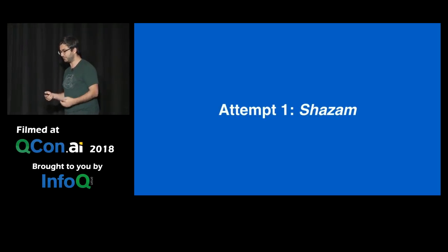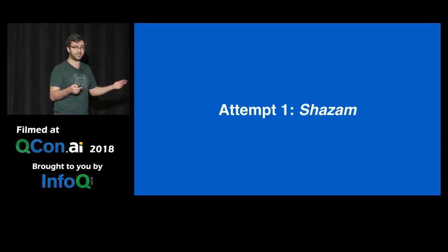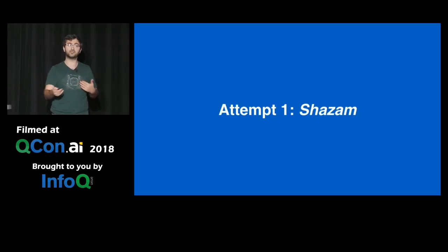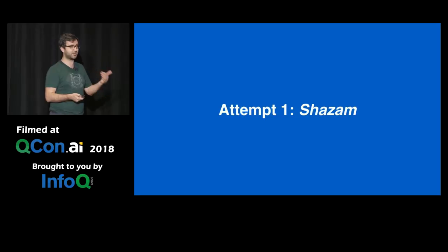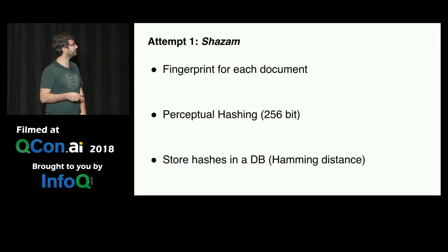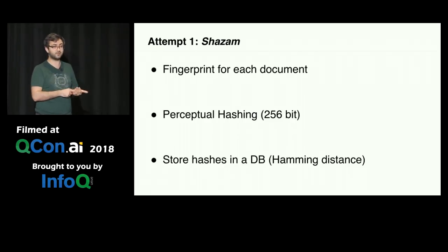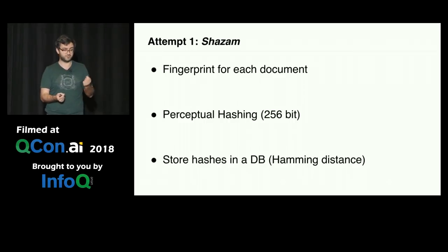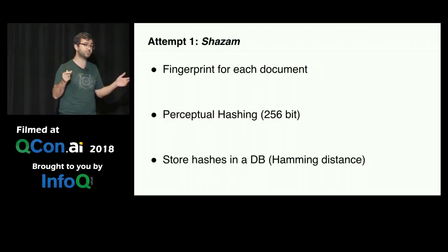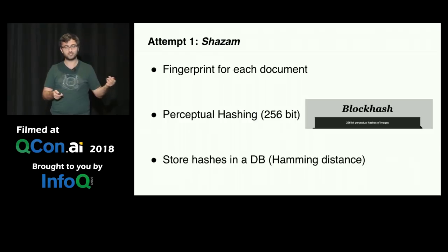I'm going to tell you the story of how we got to where we are with this problem. Our first attempt, we called it Shazam. The inspiration was audio fingerprinting — much like audio fingerprinting, we're trying to fingerprint identity pictures: driver's licenses, passport photos, green cards, things like that. What Shazam did was fairly simple: we wanted to take some kind of hash of the document. Regular hashing algorithms wouldn't work because modifying a little bit of the image produces huge changes. So we used perceptual hashing, and there's a good open source library called block hash. We started with that.